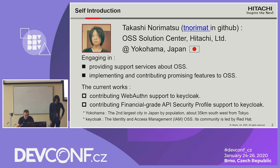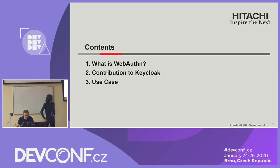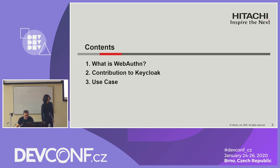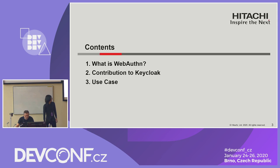The Keycloak is the identity and access management open source software, and its community is led by Red Hat. Today's first half talk consists of three parts. First, I'll explain what Web Awesome is. After that, I'll talk about my contribution to Keycloak about Web Awesome support. Finally, I'll pick up one of the use cases about Keycloak supporting Web Awesome that might be plausible in the real world.